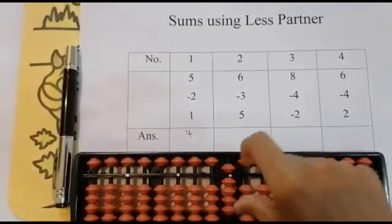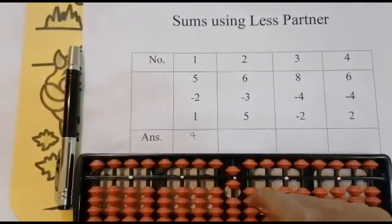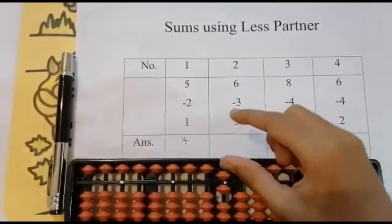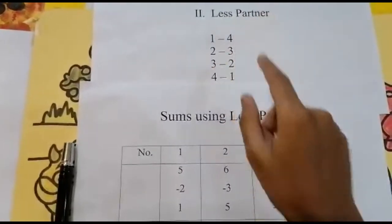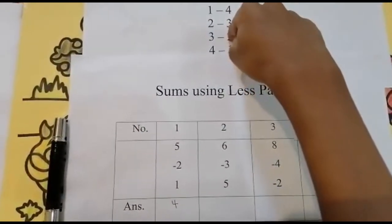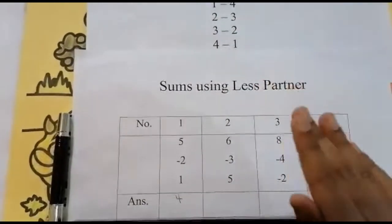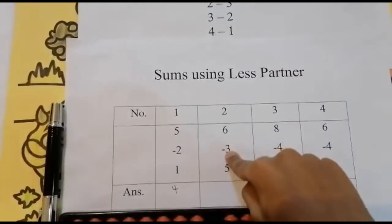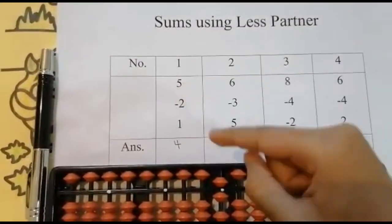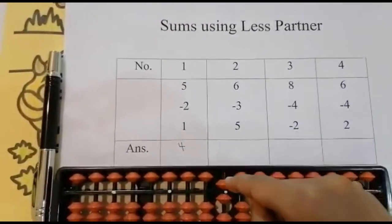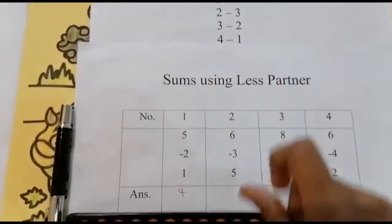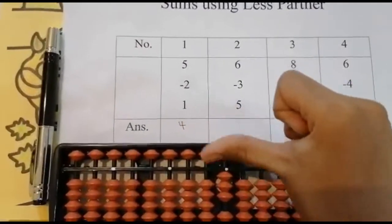Now the next number is minus three. I can't subtract three over here because if I had nine beads I could easily subtract three, but I have six values so it is not enough. The less partner concept comes. I need to subtract three — same now I need to add two values. I need to reduce three but I have five values over here, so use your four finger to push up the five first, then add two values: one, two. Use your thumb finger.